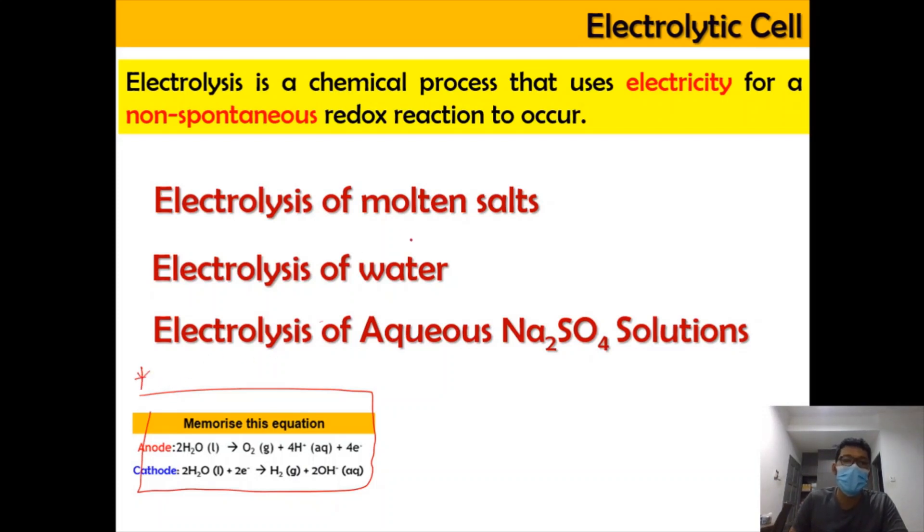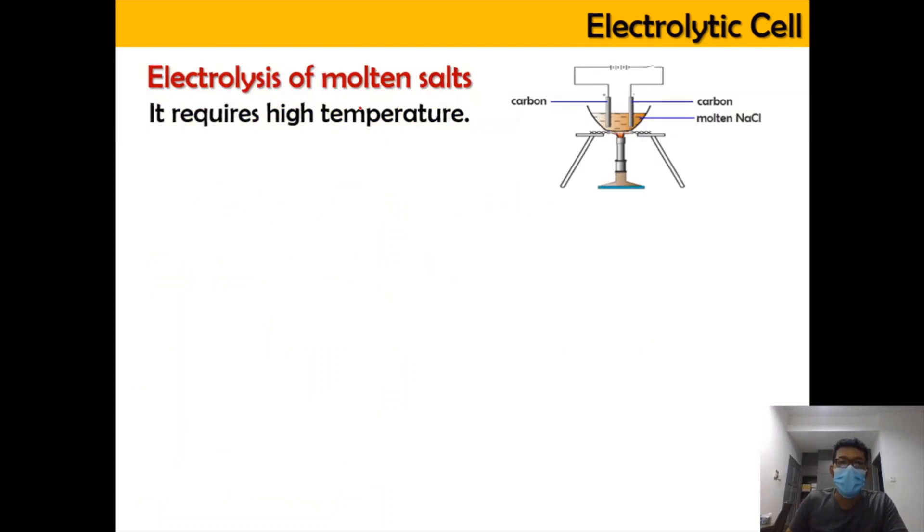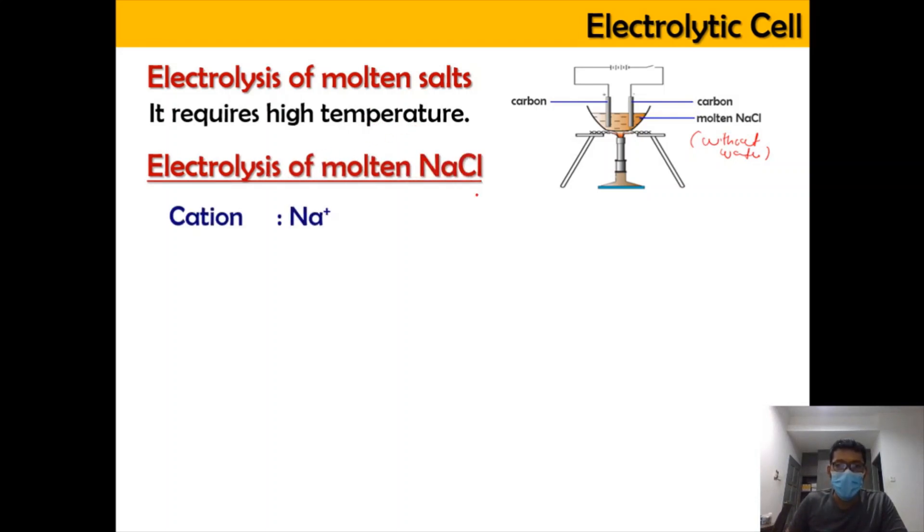Now let us look into the molten state first. For the molten state, it's basically salt that is dissociated at high temperature without water. Molten means without water and it only can occur at high temperature. For the molten state, it only has the Na+ ion and the Cl- ion without water. For the cation, we have Na+ where it will go to cathode and Cl- ion is the anion where it will go to anode.